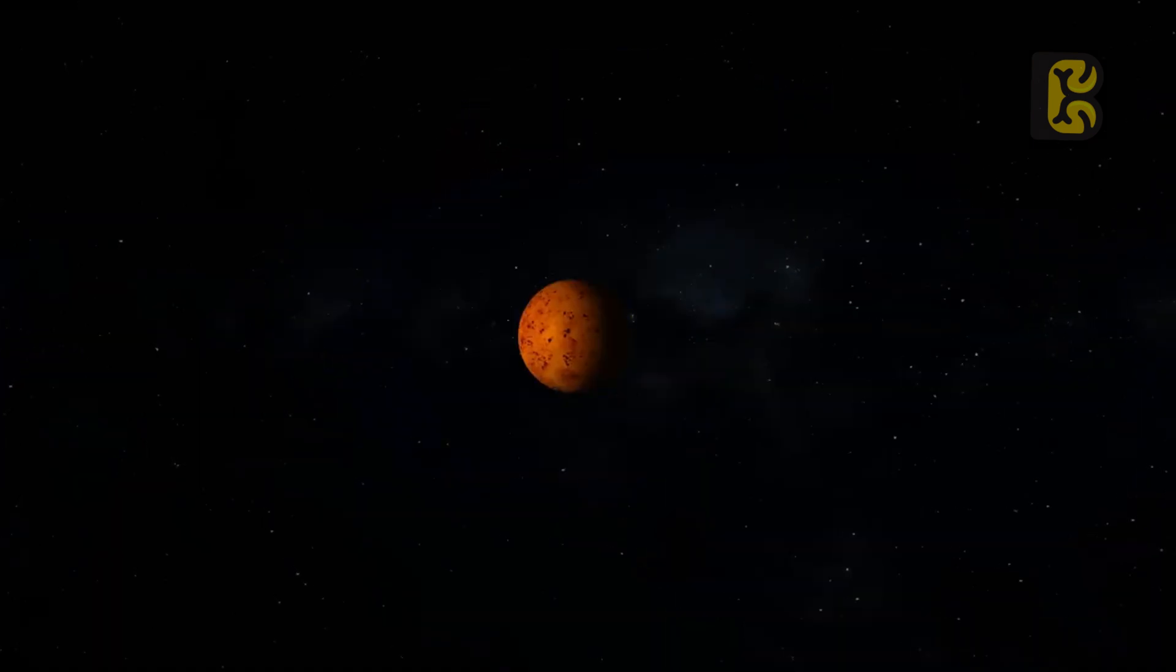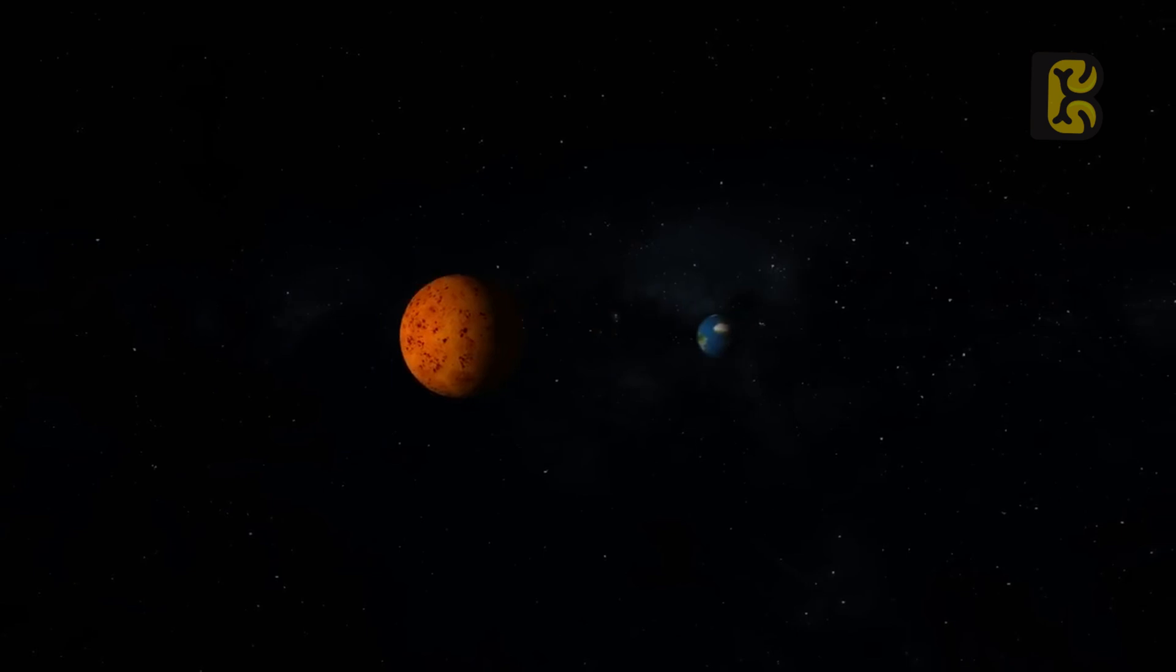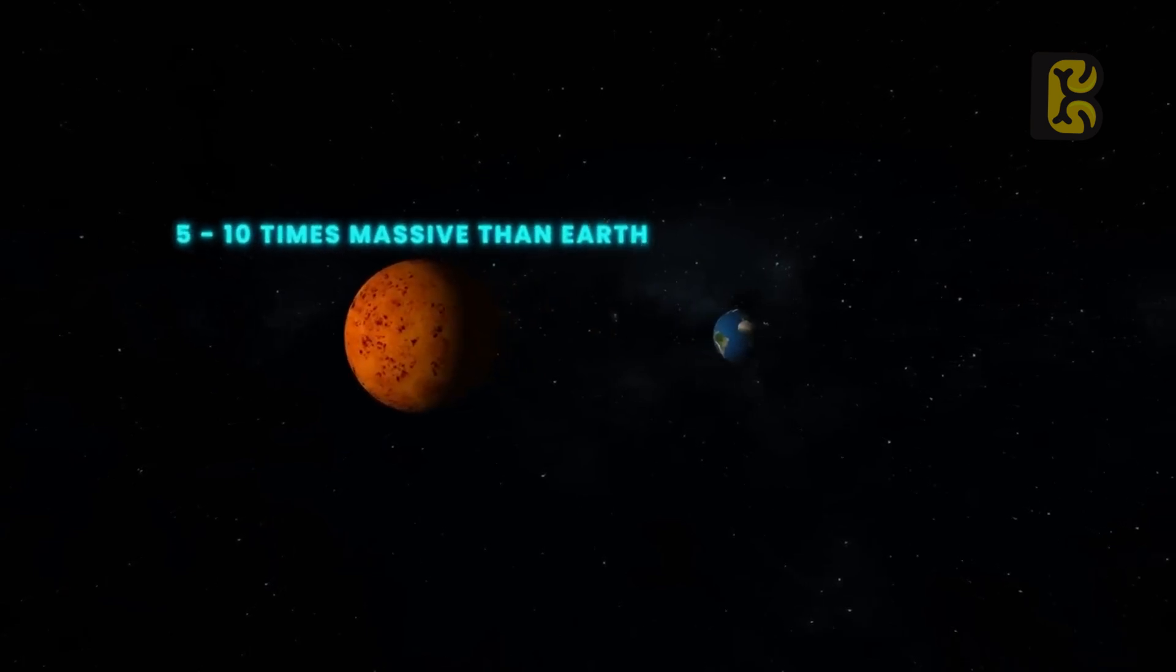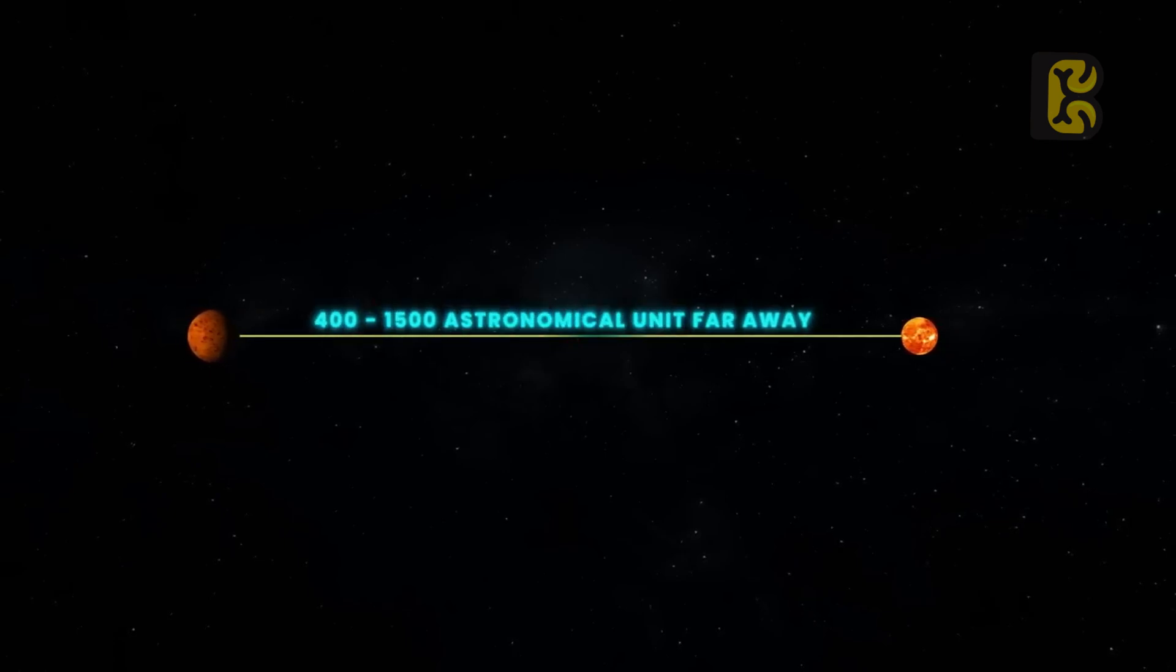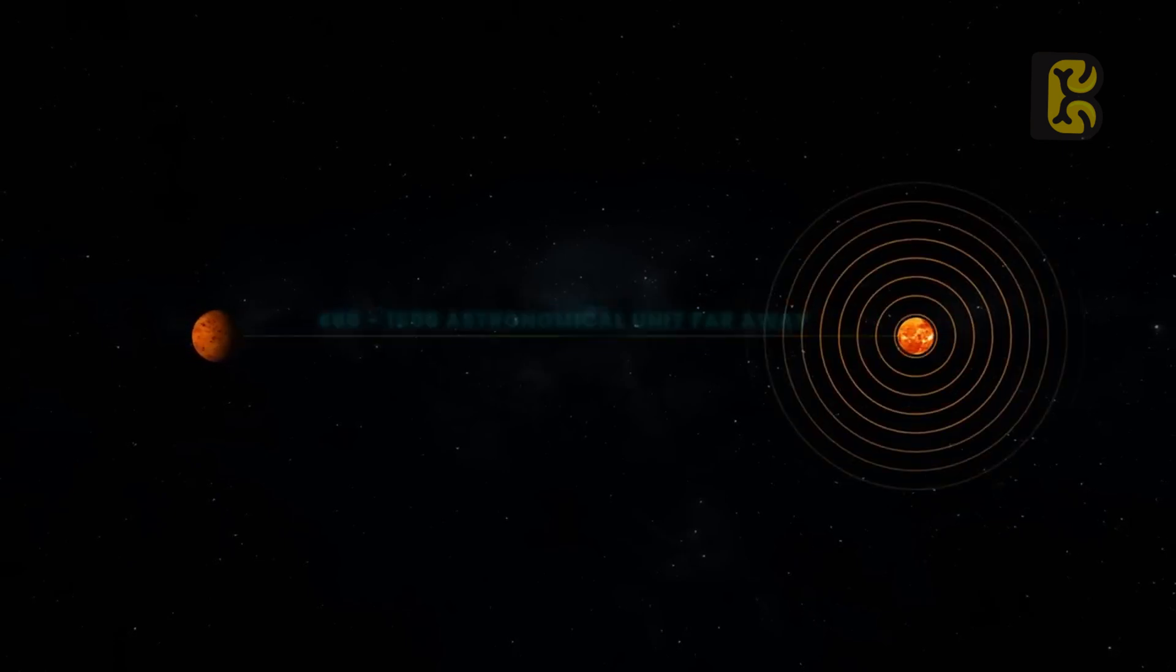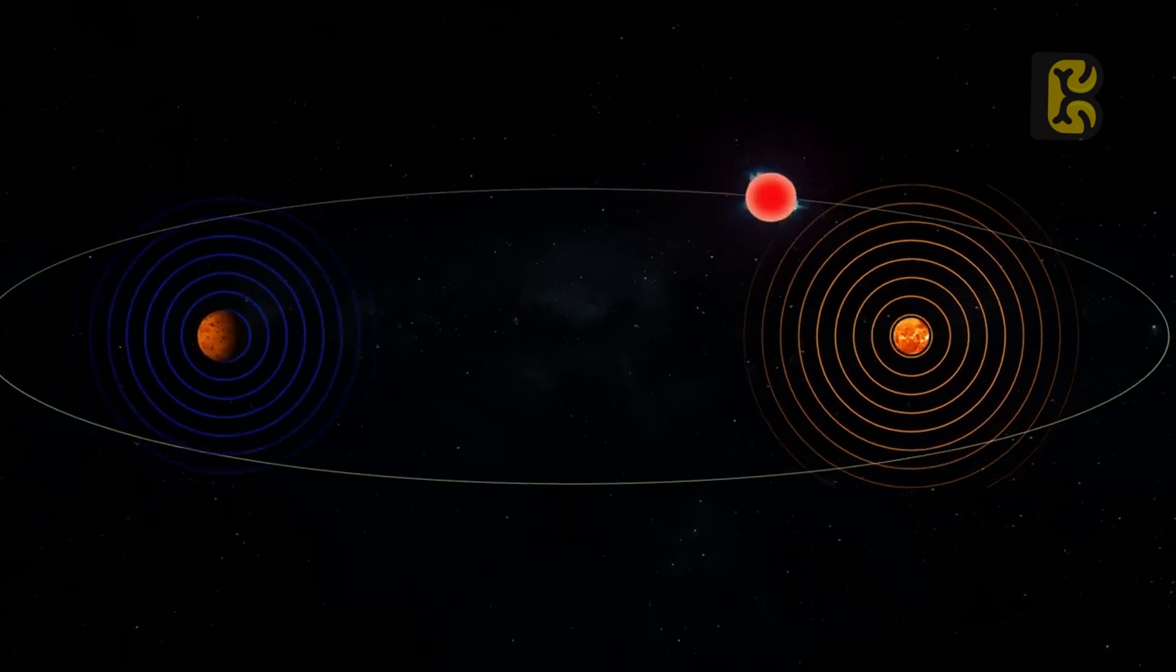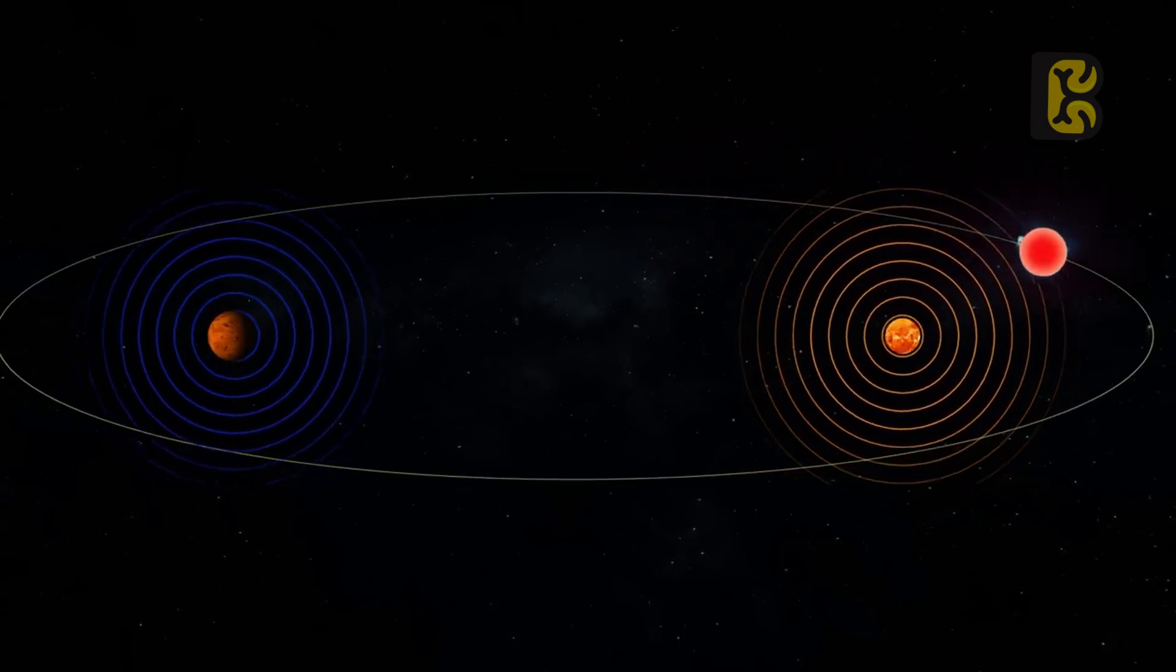If these objects are influenced by a planet, its mass should be at least 5 to 10 times that of Earth, and its distance from the sun should be about 400 to 1,500 astronomical units. Only then could it stay away from the sun's gravitational dominance and manipulate the orbits of these objects.